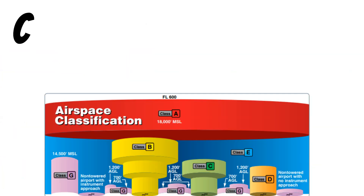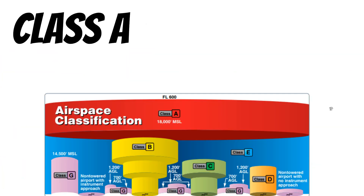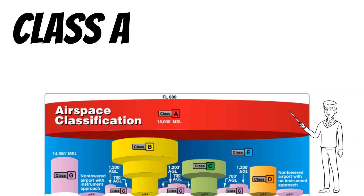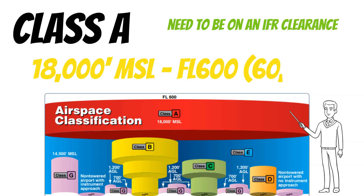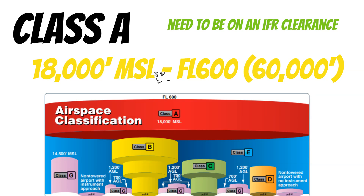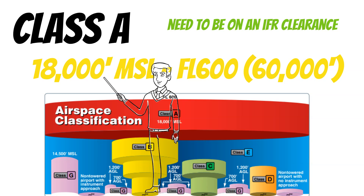First, let's take a look at Class Alpha airspace — that's this red area here. We're not going to spend too much time on this one because you need to be on an IFR clearance to be up here, among other things. You do need to know that Class Alpha airspace goes from 18,000 MSL to flight level 600, which is a pressure altitude of 60,000 feet. By the way, you heard correctly — this is 1,8000, not 18,000.